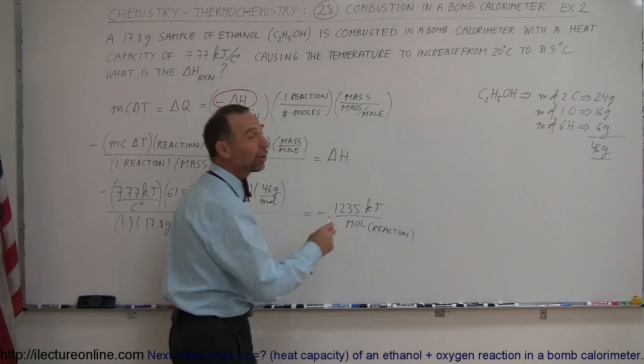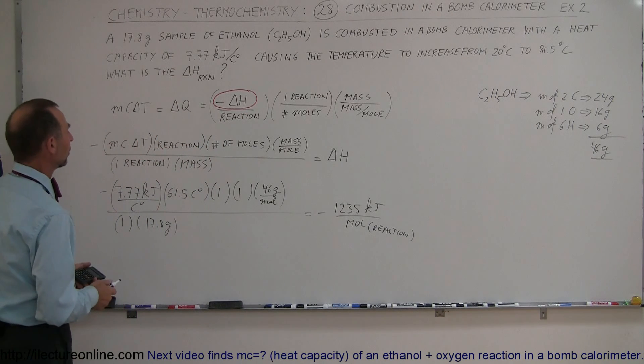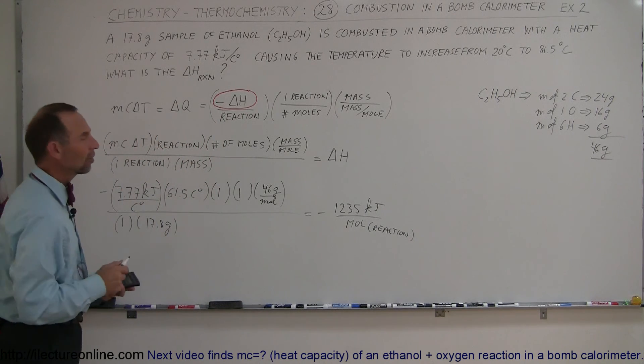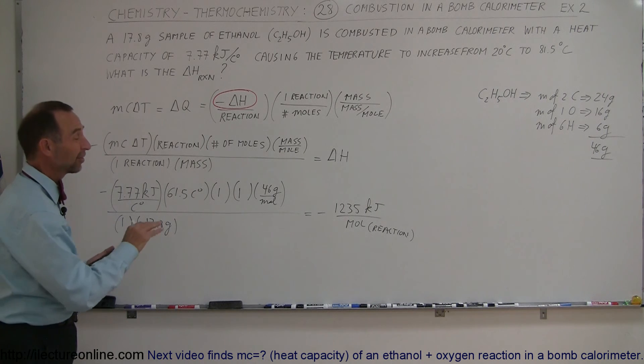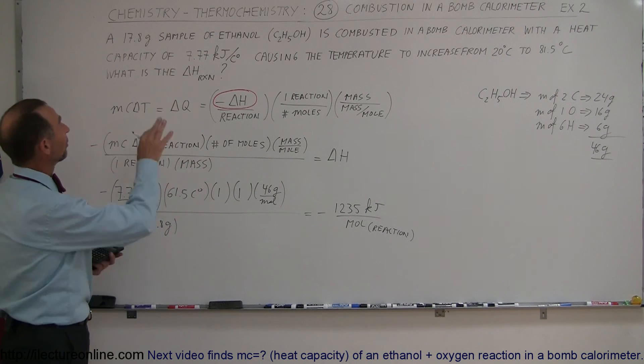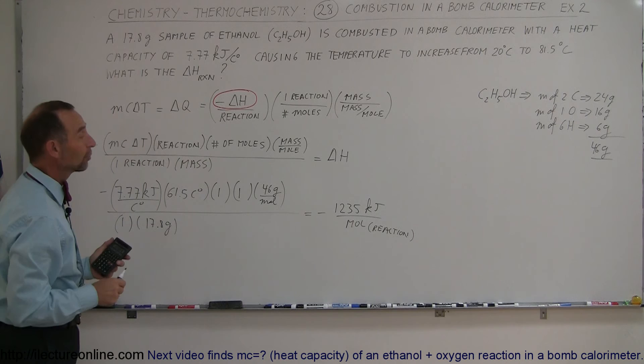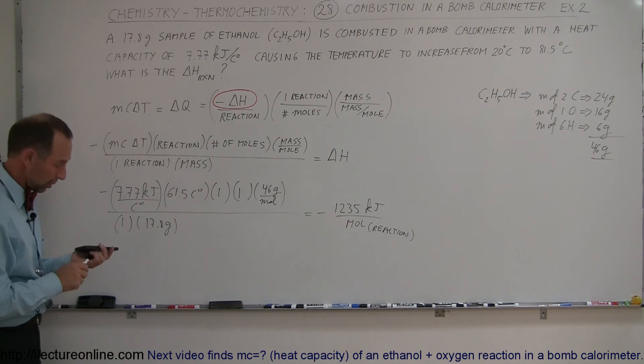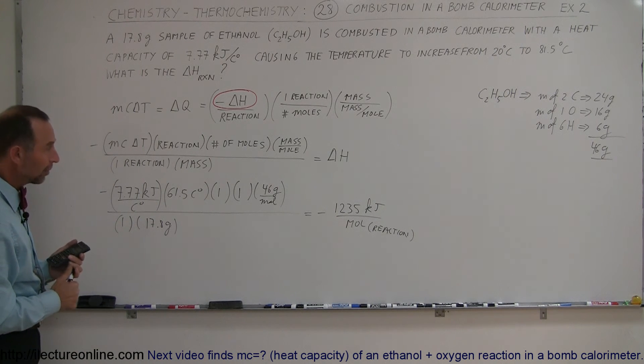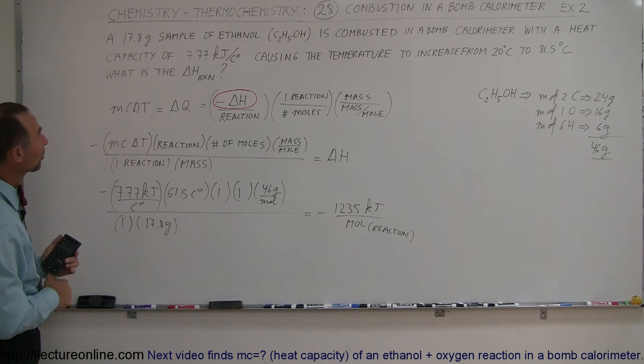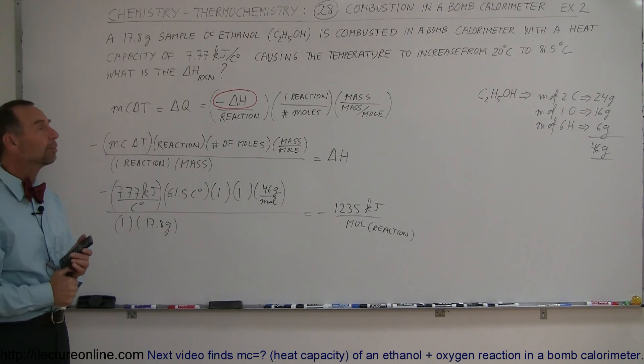Since I have one mole in the reaction, either one would work. That is very close to the number that we're supposed to get, because the enthalpy change of the burning of ethanol is right around 1,235 kilojoules per reaction. That works pretty well. And that is what we do with bomb calorimeters.